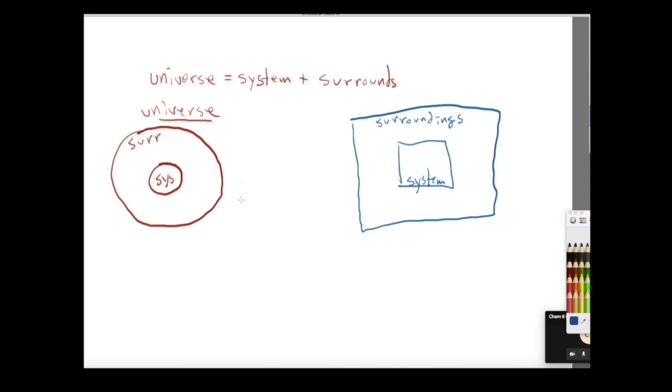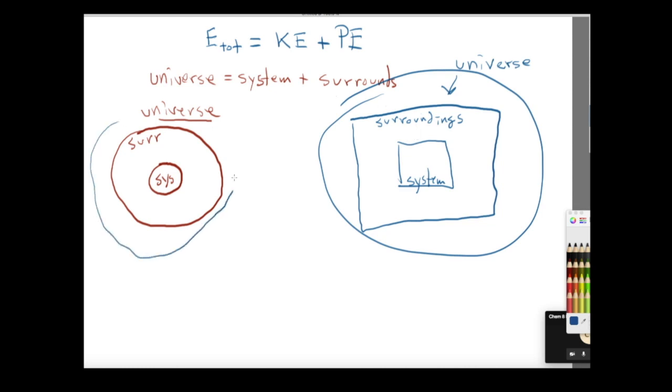And how we make this, in other words, this is the universe is the two things together, is the two things summed together. And this way we can account always for the total energy, right? Because the energy total is going to be equal to the kinetic energy change that's going on inside this universe, plus whatever's going on with the potential energy. So again, the universe is this whole thing together.